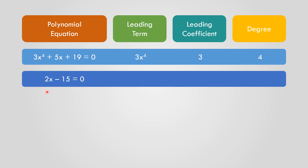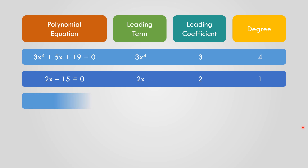Number 2: 2X minus 15 equals 0. The leading term is 2X. The leading coefficient is 2. The degree is 1, because the highest exponent of X is equal to 1.